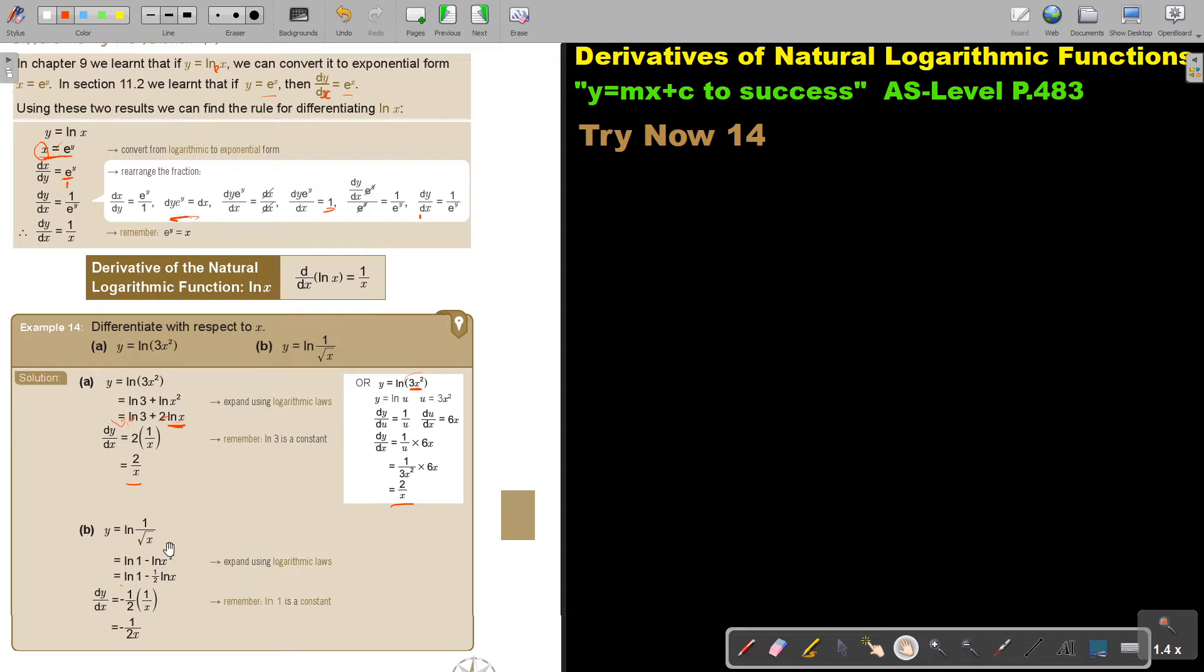The next one, again, I use the rules. So, it's a division. So, it becomes subtraction. I put the half in front. A constant always just becomes 0. Minus a half, ln x is 1 over x. And this is my final answer.